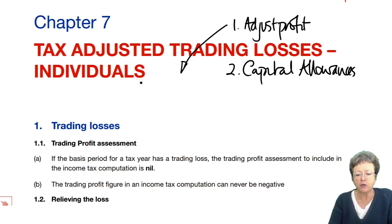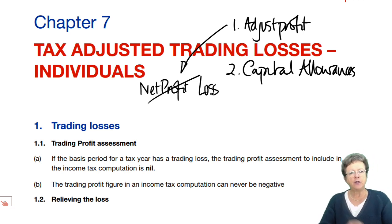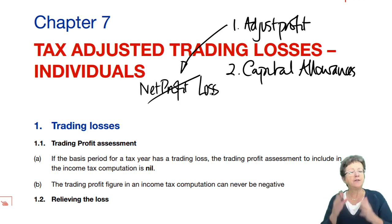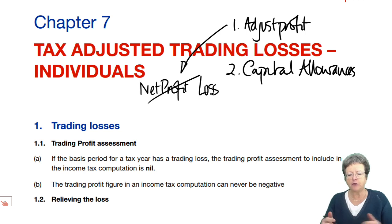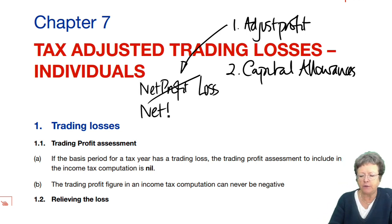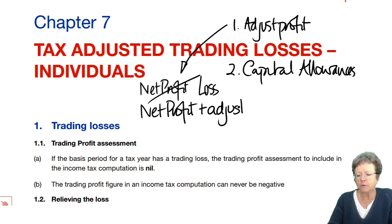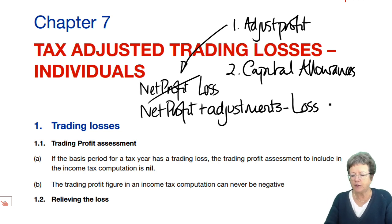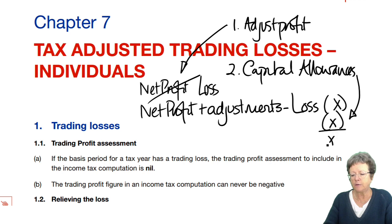You might actually start off — instead of starting with a net profit, you might actually start with a loss. If that's the case, then you put the loss at the top of the computation and deal with the add-backs and the deductions exactly the same as you would do if you were dealing with a profit. It might be that you start with a net profit, but by the time you've done all the adjustments, you have a loss — and if that were the case, the capital allowances would increase that loss.